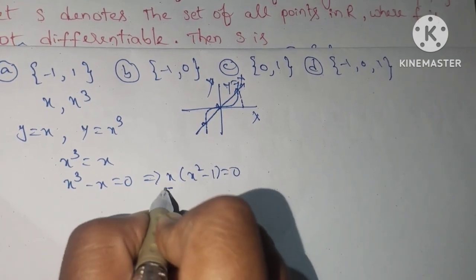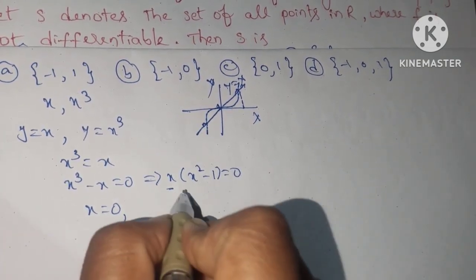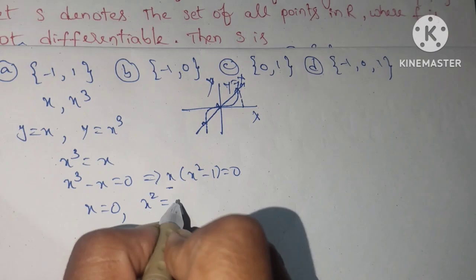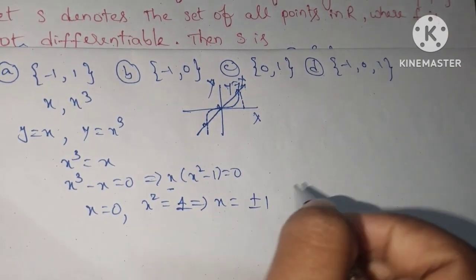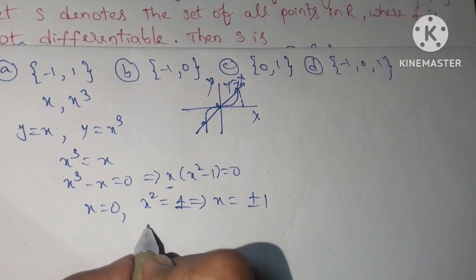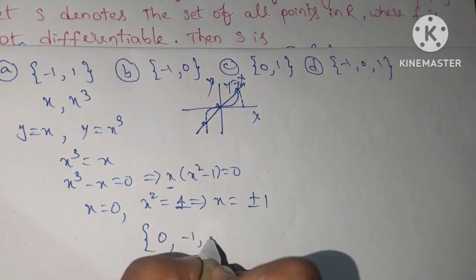Take x common: x(x² - 1) = 0. So one value is x = 0. The next two values: x² = 1, then x = ±1. So the values are {0, -1, 1}. What is the option? Option (d).